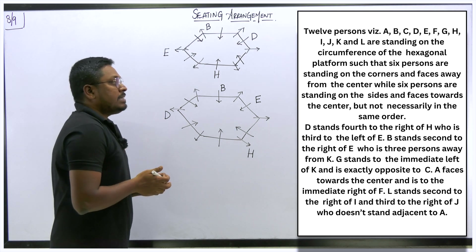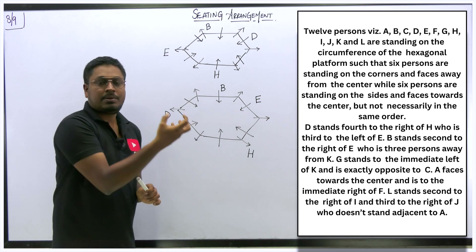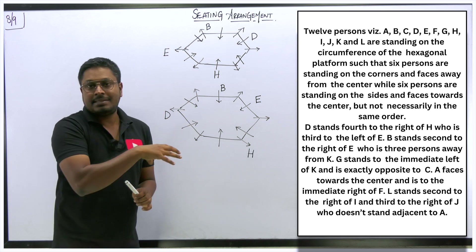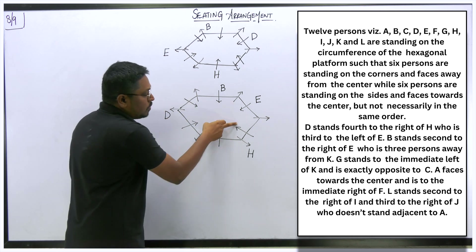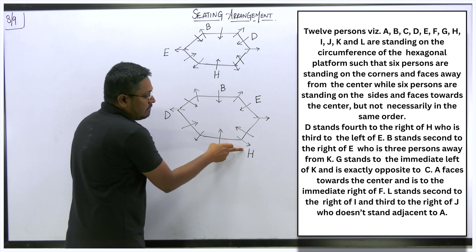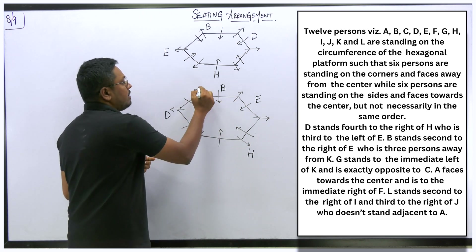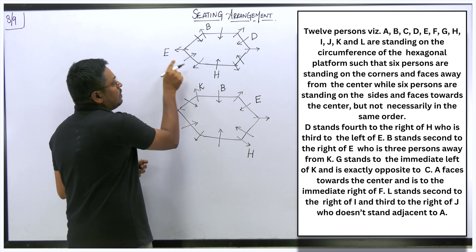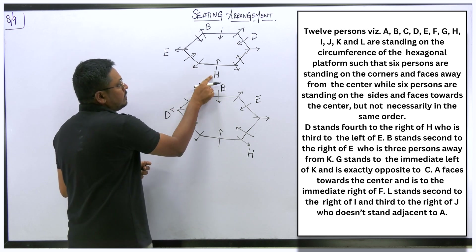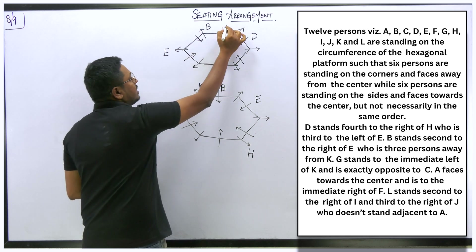Next clue: E is 3 persons away from K. Counting three positions from E — but H is already placed — so K goes at the third available position in both diagrams.